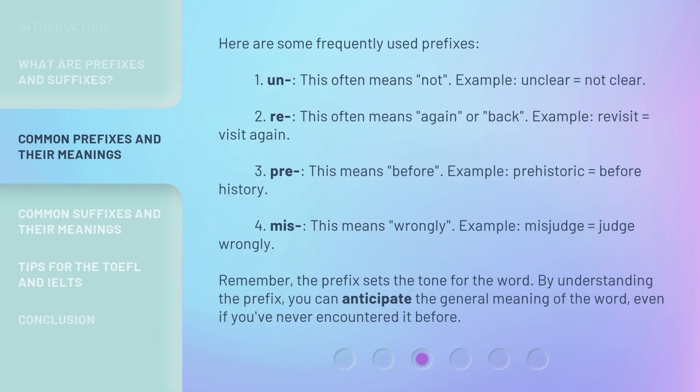Here are some frequently used prefixes. 1. Un — this often means 'not'. Example: 'unclear' equals 'not clear'. 2. Re — this often means 'again' or 'back'. Example: 'revisit' equals 'visit again'. 3. Pre — this means 'before'. Example: 'prehistoric' equals 'before history'. 4. Mis — this means 'wrongly'. Example: 'misjudge' equals 'judge wrongly'. Remember, the prefix sets the tone for the word. By understanding the prefix, you can anticipate the general meaning of the word, even if you've never encountered it before.